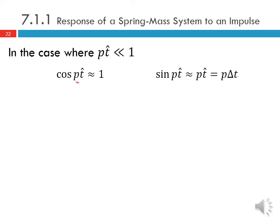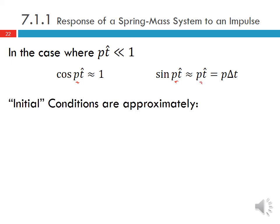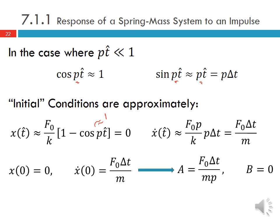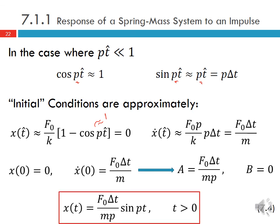Using these approximations, the initial conditions are approximately: displacement x(t-hat) ≈ F₀/k(1 − cosine(p·ΔT)) ≈ 0, and velocity ≈ F₀·ΔT/m. These become our initial conditions after the impulse. So x(t) equals F₀·ΔT/(mp) · sine(pt), valid for all t greater than zero, assuming ΔT is very small.